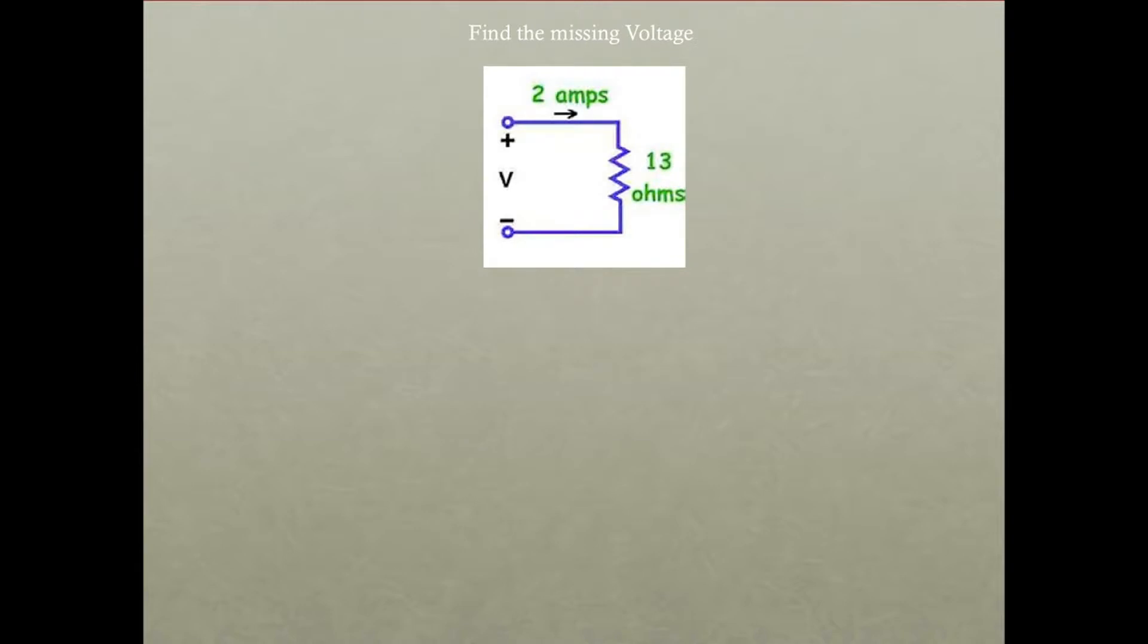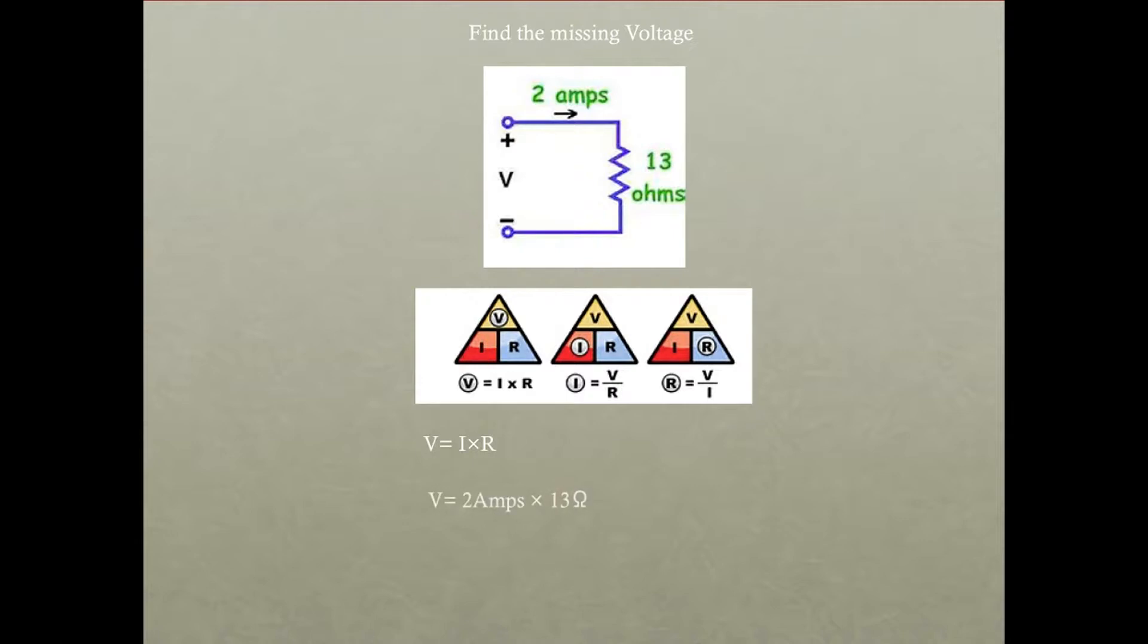Take another example here quickly. Find the missing voltage. So we get our triangles up and we see our very first triangle, V equals I times R. So we know that the I is 2 amps and the R is 13 ohms. Our V is 26 volts.